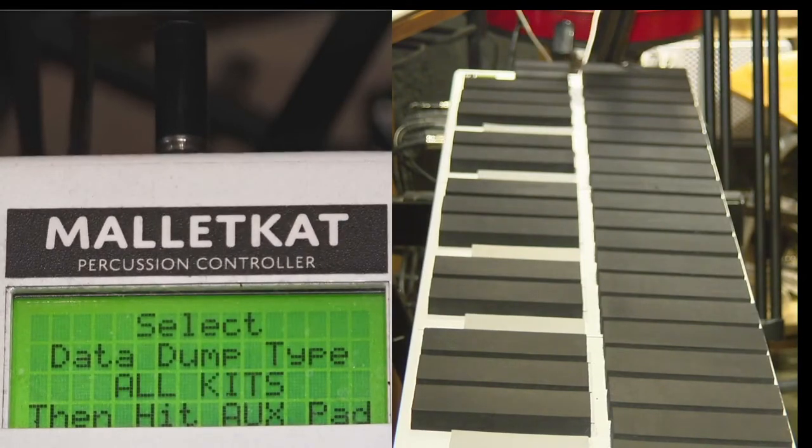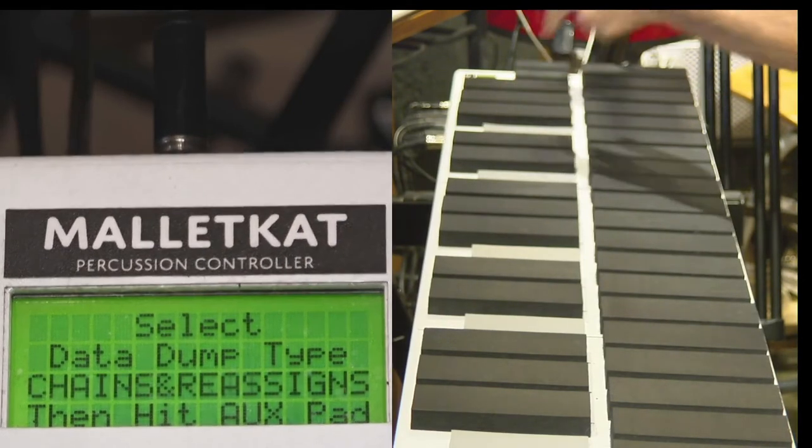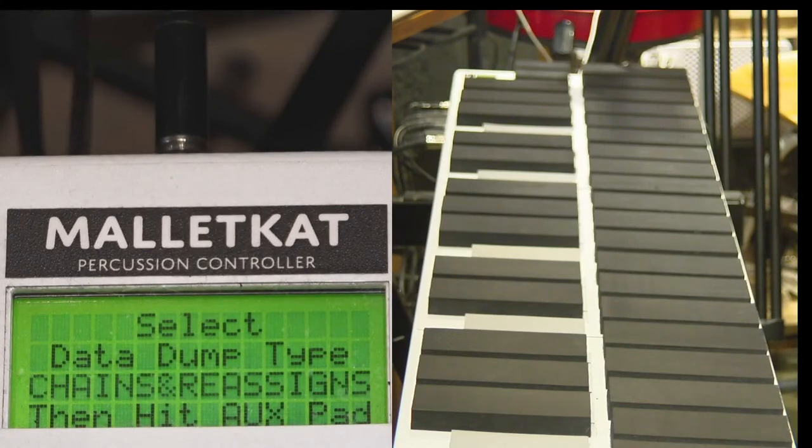Then there's all kits, those are the 127 user kits, and then chains and reassigns, so that when you create your own chains and reassignments, you can call them back at any time.